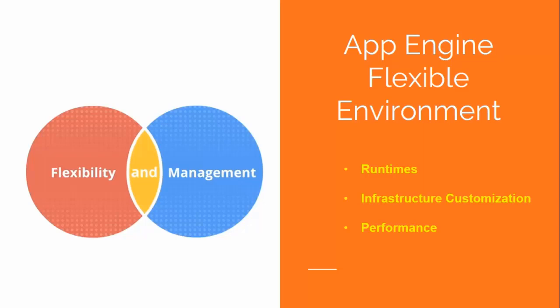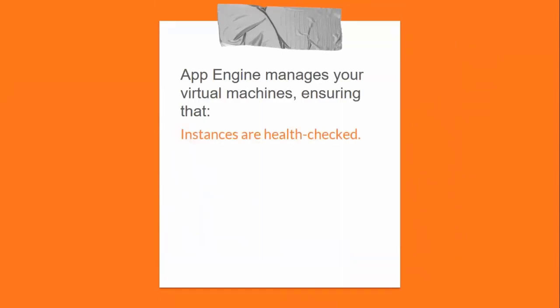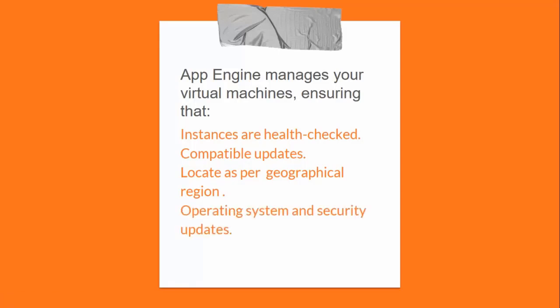App Engine manages your virtual machines: it ensures instances are health-checked and healed as necessary, and co-located with other services within the project. It also ensures critical backward compatibility updates are automatically applied to the underlying operating systems. VM instances are automatically located by geographical region according to project settings, ensuring all VM instances are co-located for optimal performance. VM instances are restarted on a weekly basis, during which Google's management services apply any necessary operating system and security updates.